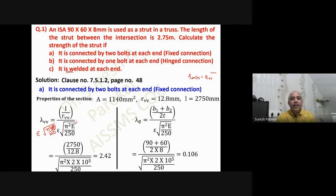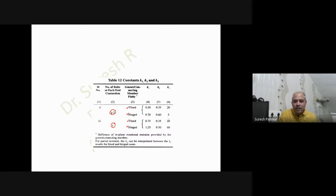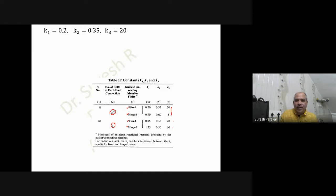Going to Table 12 to find the constants k1, k2, and k3: we have two cases — greater than or equal to two bolts, and only one bolt — and for each case, two types: fixed connection and hinged connection. The values of k1 are 0.2 and 0.7; k2 are 0.35 and 0.6; and the k3 value is 25 for the two-bolt fixed case.